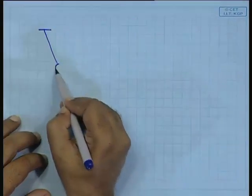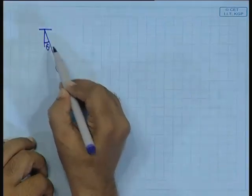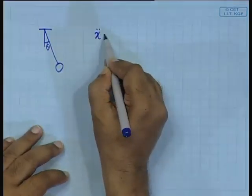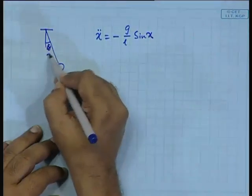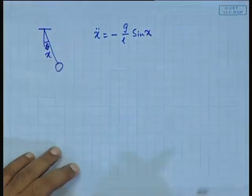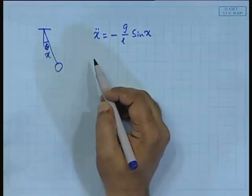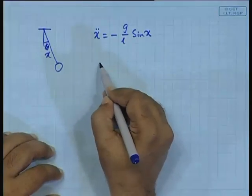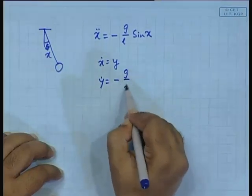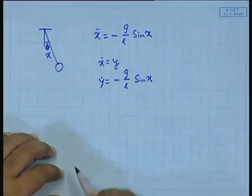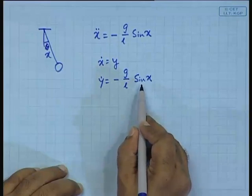Take the simplest possible example: the simple pendulum. What was the equation? If theta is x, the equation was x-double-dot equals minus (G/L)·sin x. Writing in first-order form: x-dot equals y and y-dot equals minus (G/L)·sin x. This is a nonlinear differential equation because the sin term is there.